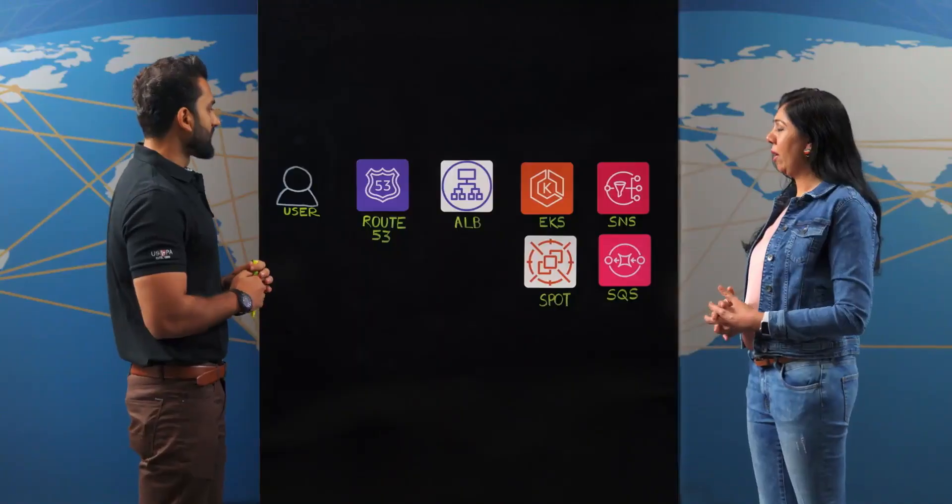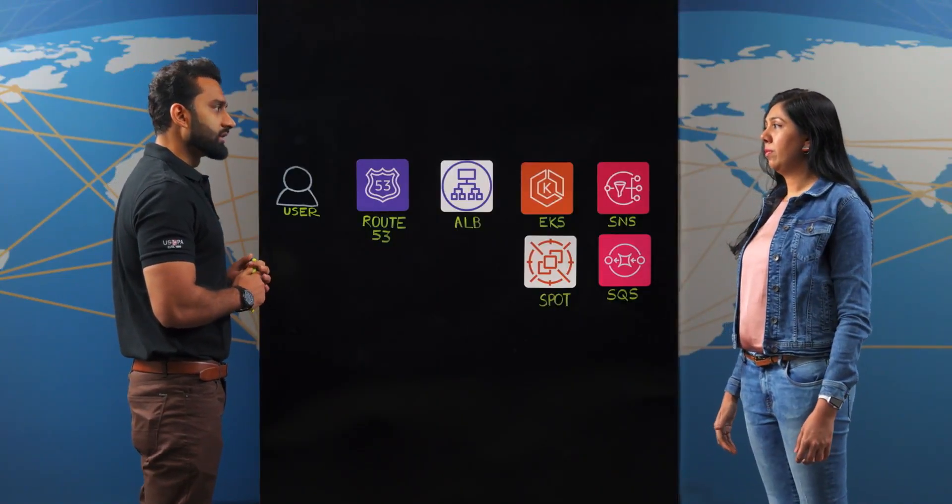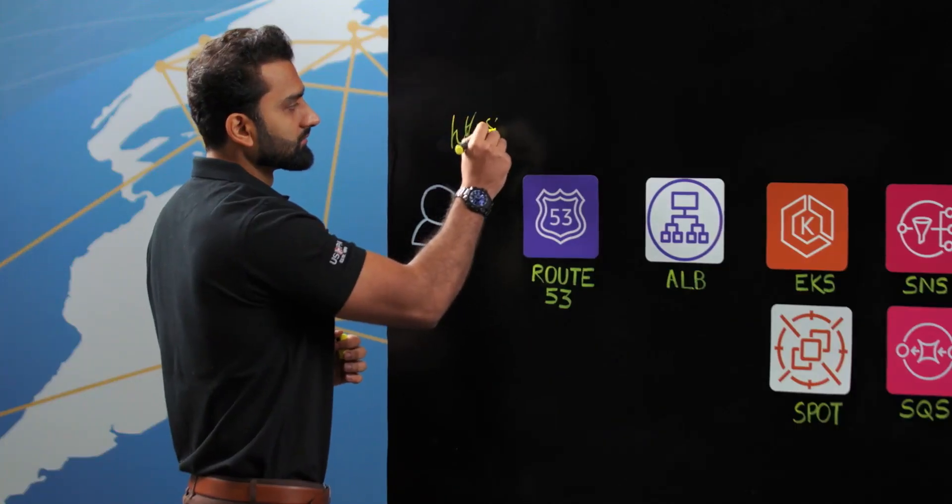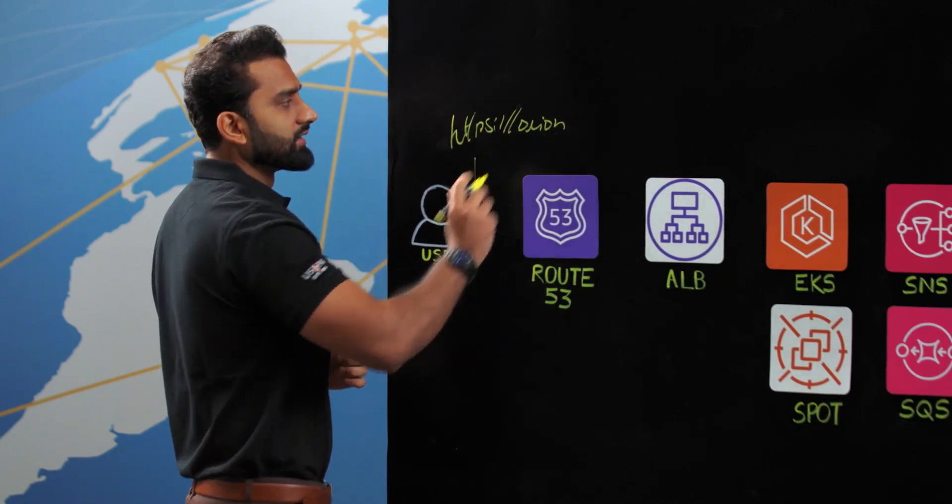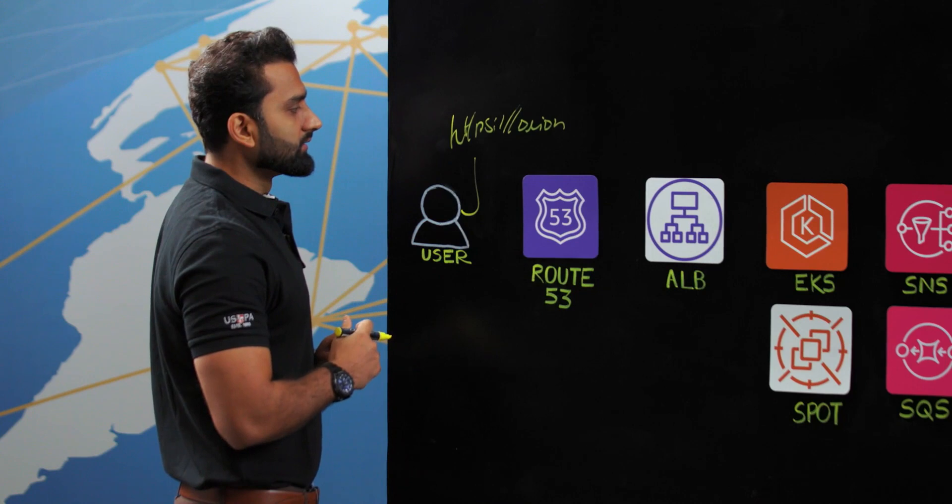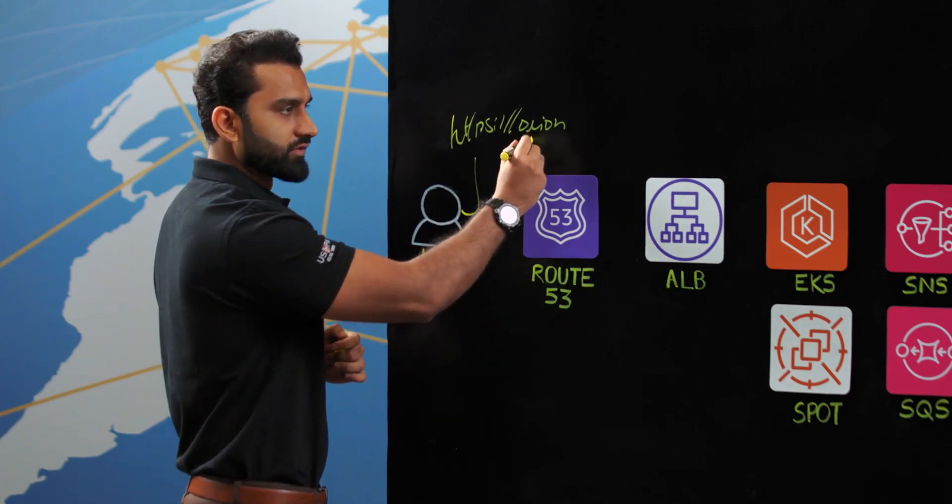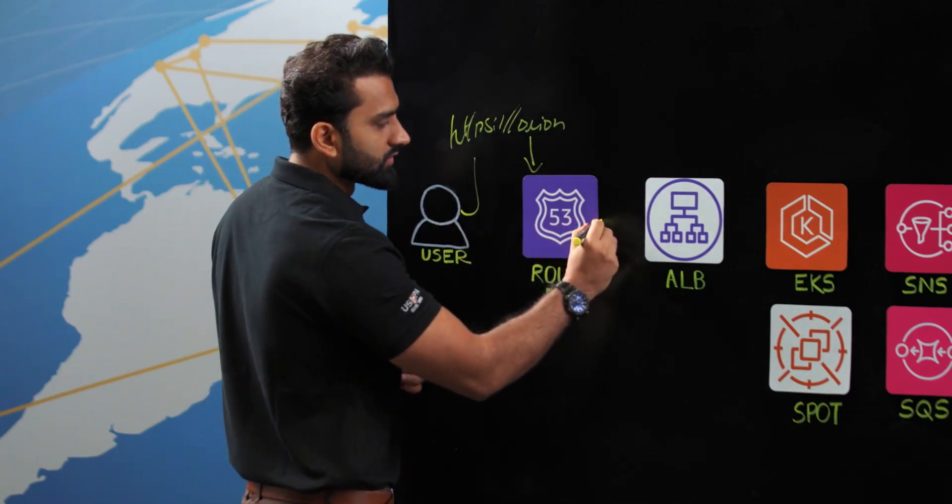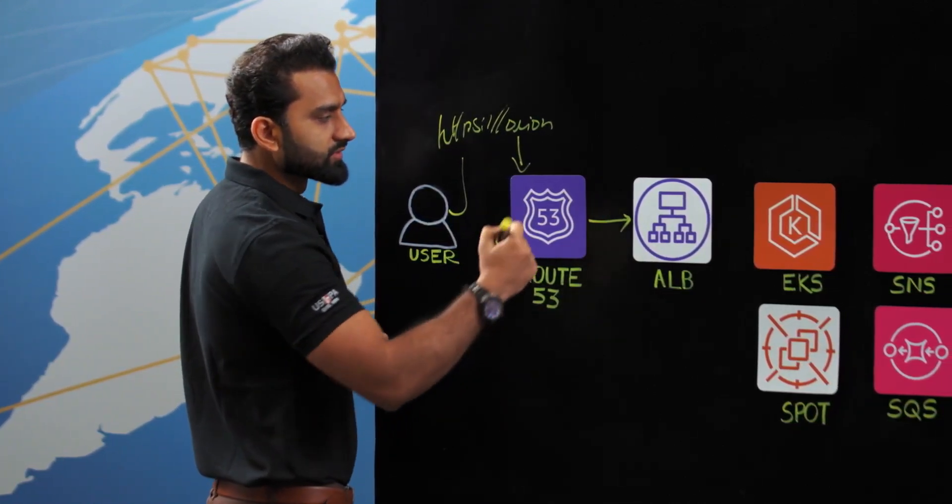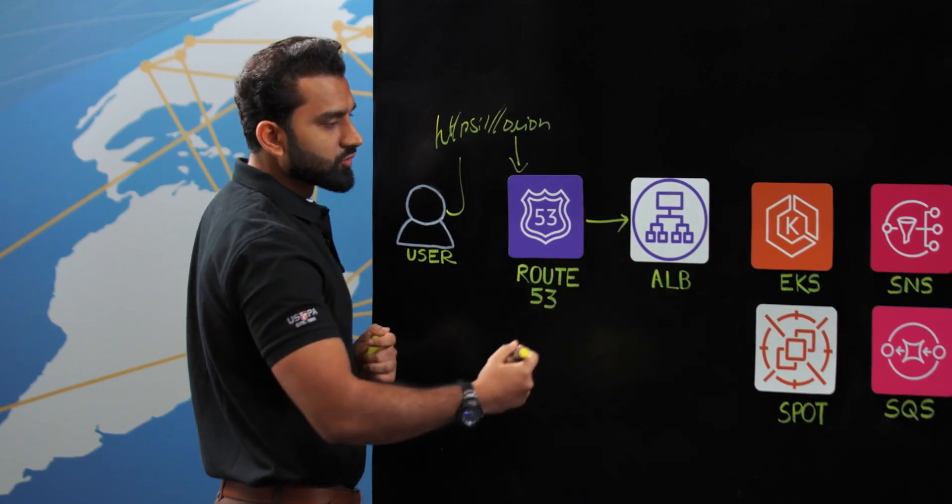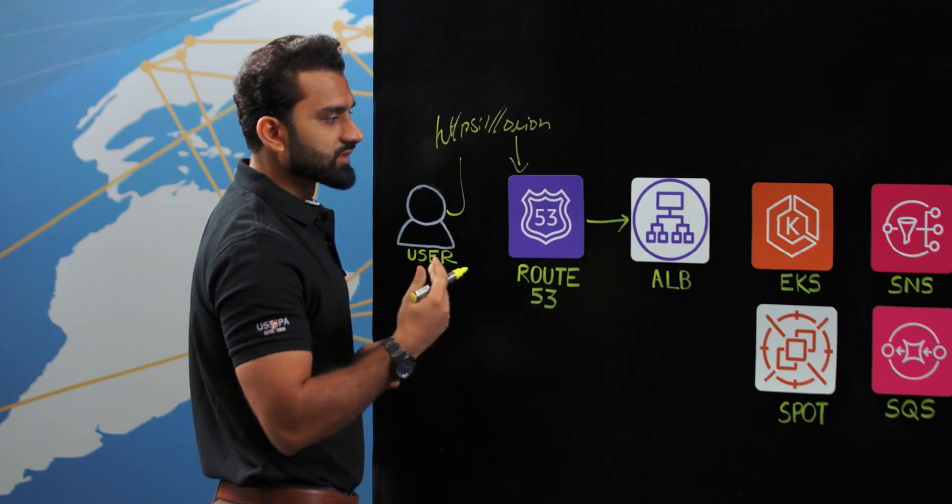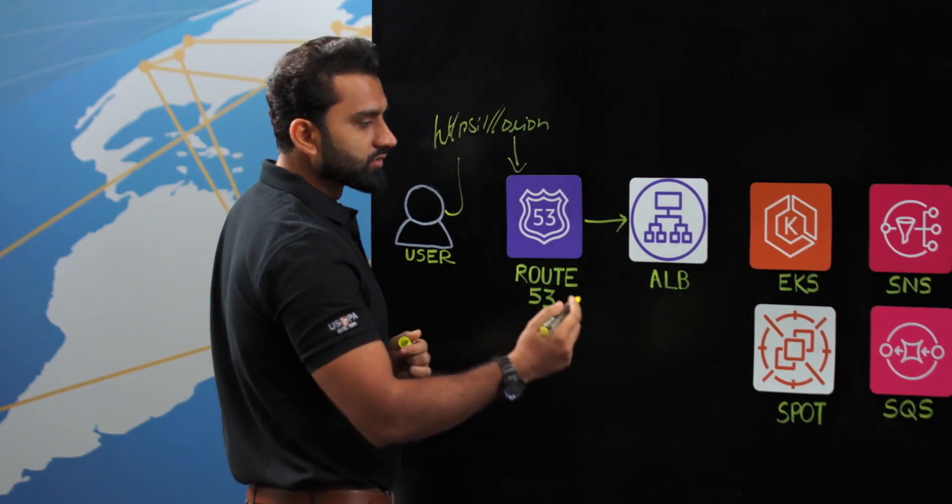So as an end user, if you want to have an environment you just go to the Orion portal. Once you have the URL and open up the Orion portal, the DNS resolution goes to Amazon Route 53—we're using it for DNS resolution—and then it resolves the DNS to the Amazon Application Load Balancer. Then the Application Load Balancer sends the request to our Kubernetes pods. We're using Amazon EKS as our container orchestrator, and all of our workload is running on AWS EKS.